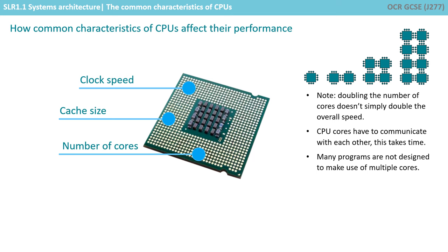CPU cores have to communicate with each other. The more cores you have, the more communication needs to take place to keep everything in sync, and this costs time and efficiency. On top of this, many programs are simply not designed to make maximum use out of multiple cores.